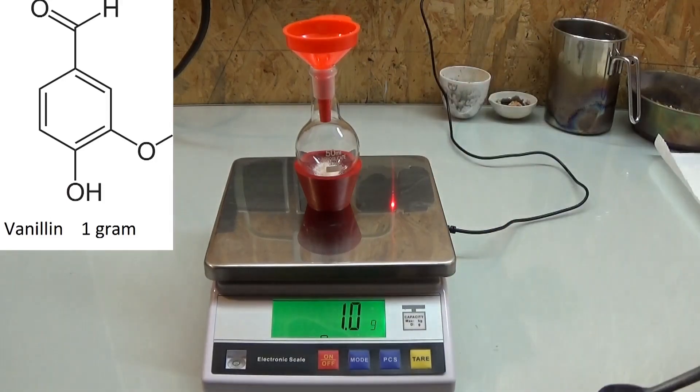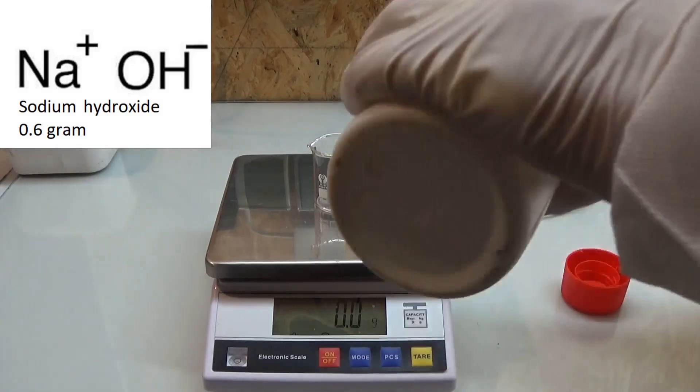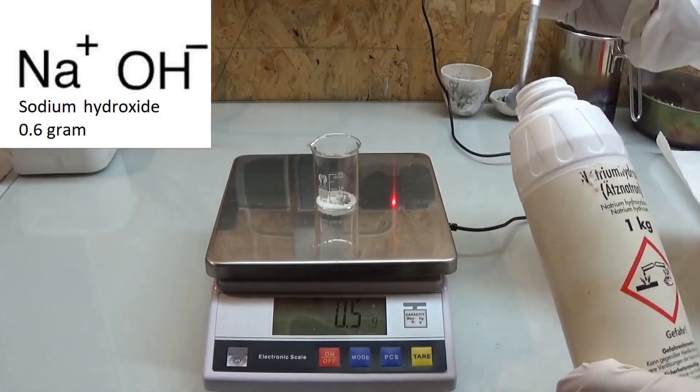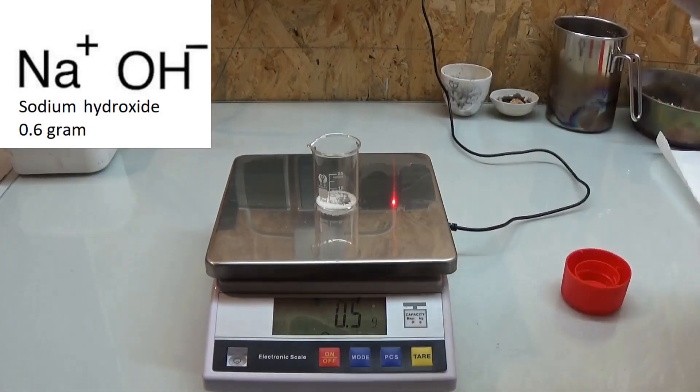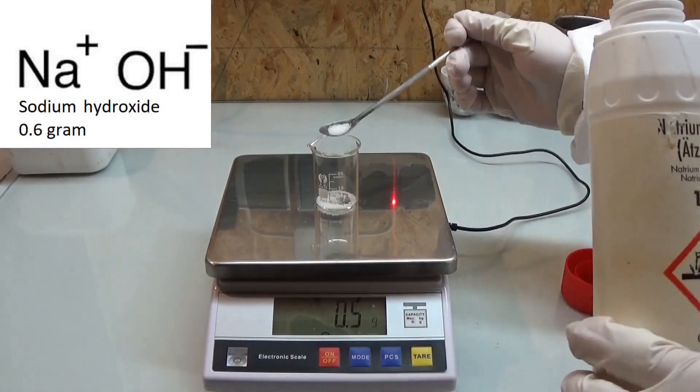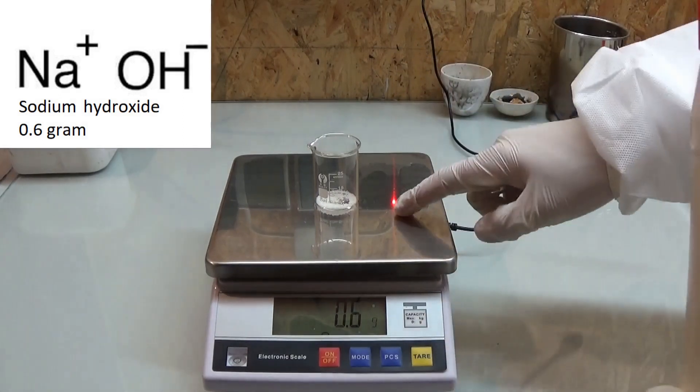To begin I weigh out 1 gram of pure food grade vanillin followed by 0.6 grams of sodium hydroxide which acts as our catalyst and forms the alkoxide from vanillin.